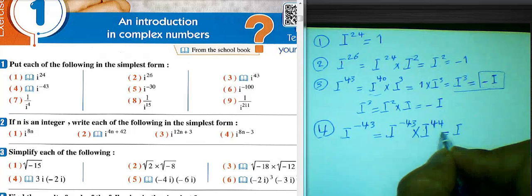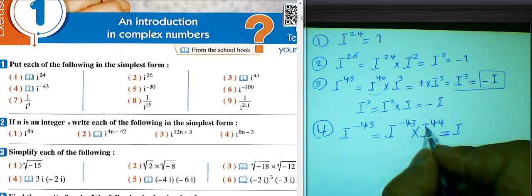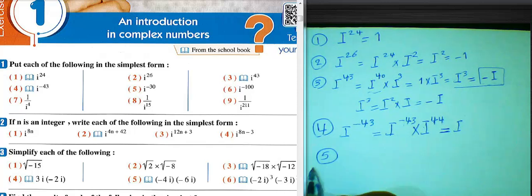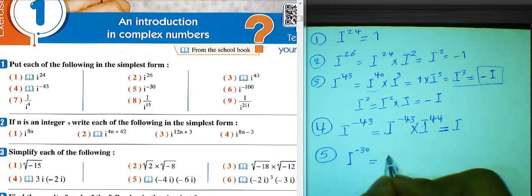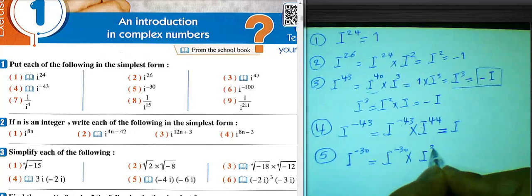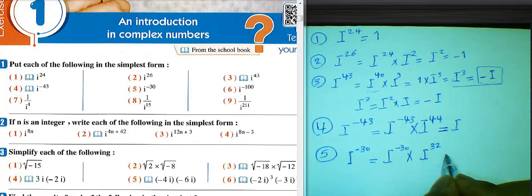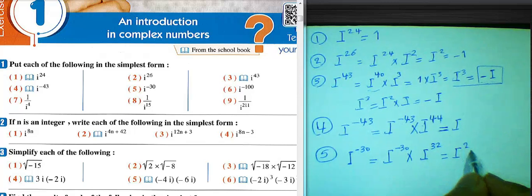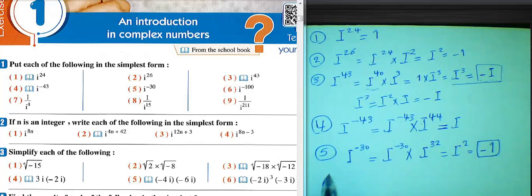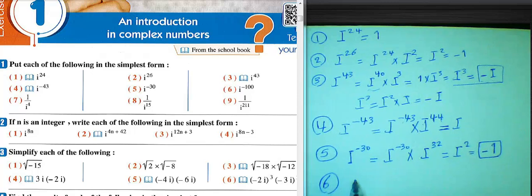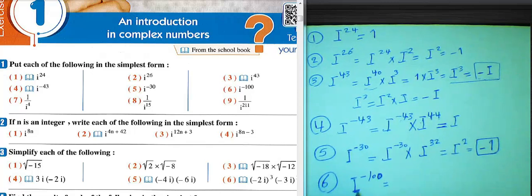Number 5: i^-30. We can solve it by multiplying by i^32, because 32 can be divided by 4, so i^32 equals 1. Then we can write i^2, and i^2 equals negative 1. The result will be negative 1.